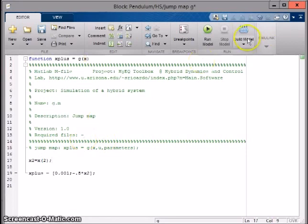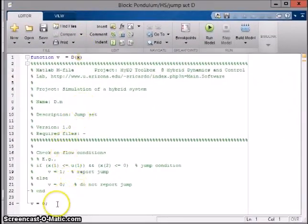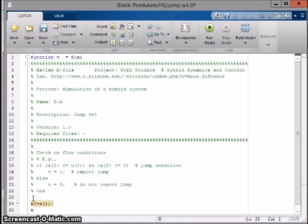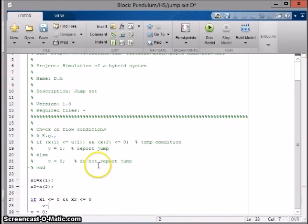Finally, the jump set d will return one if theta is less than or equal to zero and theta dot is also less than zero. Again, define the state and start the loop. If x1 is less than or equal to zero and x2 is less than or equal to zero, v equals one. Else, v equals zero.